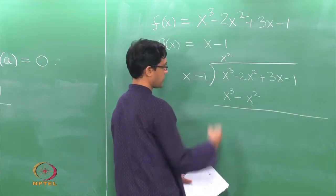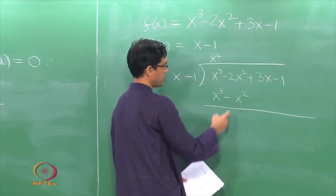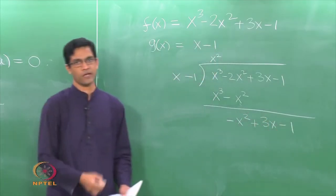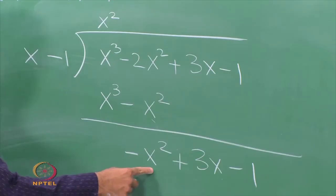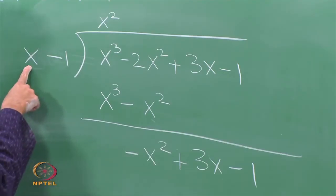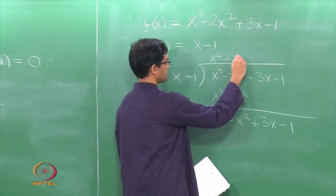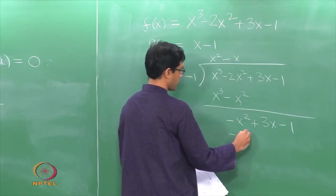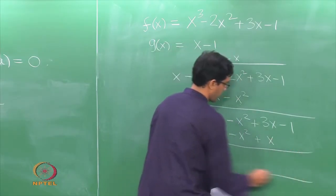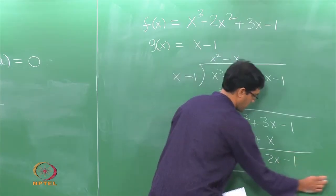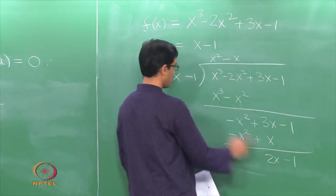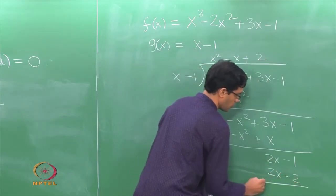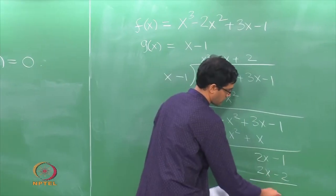When we subtract, we end up cancelling the highest power of X — that is how it is designed. So we get minus X square plus 3X minus 1 and continue the same procedure: divide minus X square by X, the quotient is minus X. Now multiply X minus 1 by minus X, giving minus X square plus X. Subtract again to get 2X minus 1. Divide 2X by X to get 2, multiply 2 by X minus 1 to get 2X minus 2, subtract again to get minus 1 minus of minus 2, which is plus 1.